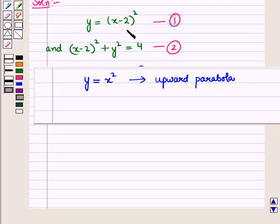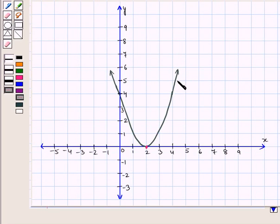Now let us draw its graph. This is the graph of the first equation, y equals (x-2)², which is an upward parabola with vertex at (2,0).